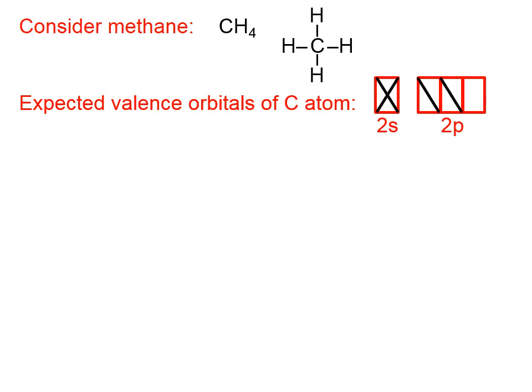The problem here is that valence bond theory would predict that carbon can only form two bonds, because valence bond theory says that bonds form when atoms that have orbitals with just one electron overlap with other atoms' orbitals that also have just a single electron. Well, then carbon could only form two bonds according to this. And clearly, that violates what we observe in the real world.